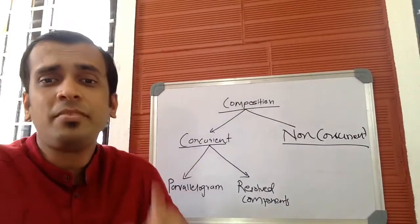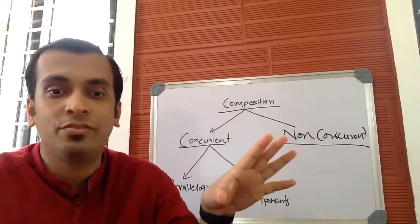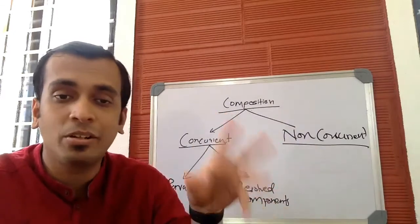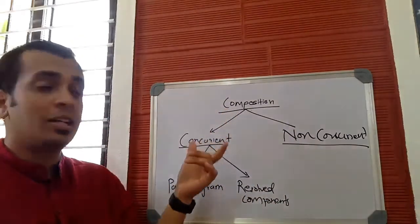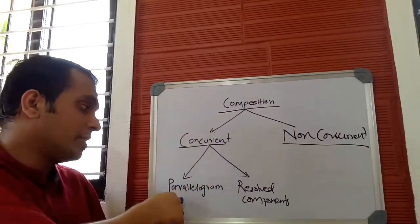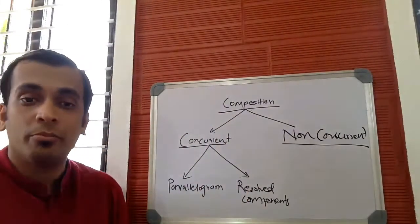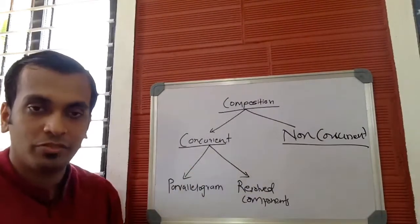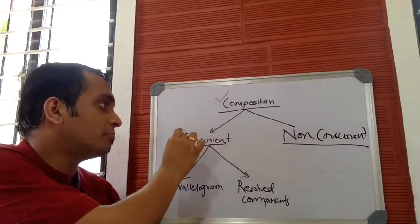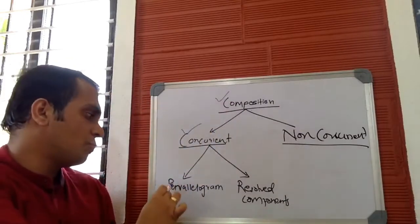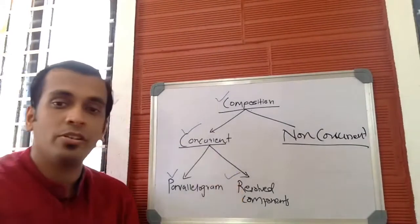Hello everybody. We were going through the composition of concurrent flow system, which we have now completed. Concurrent flow systems can be composed using two methods: the first method is the parallelogram law of forces, and the second method is the principle of resolved components. We have completed both methods.